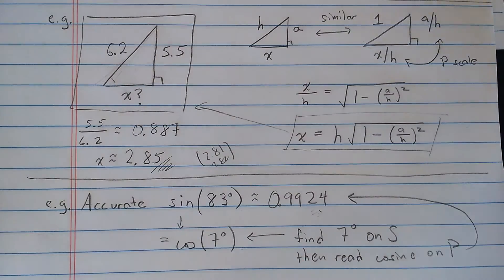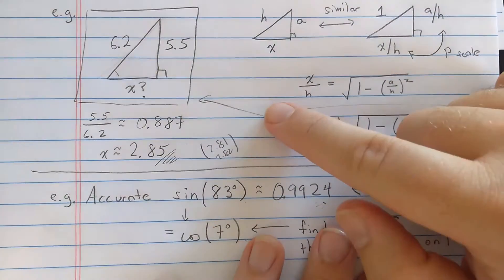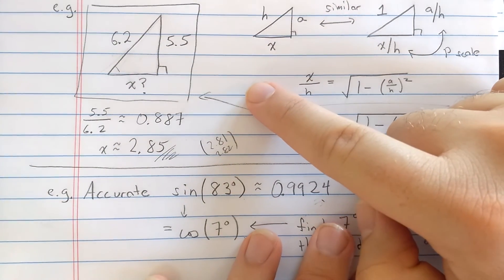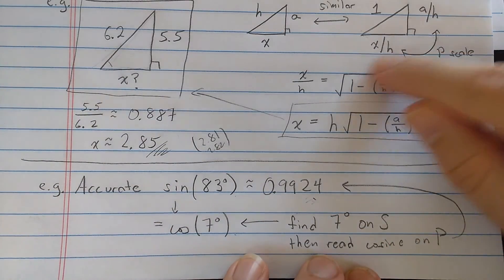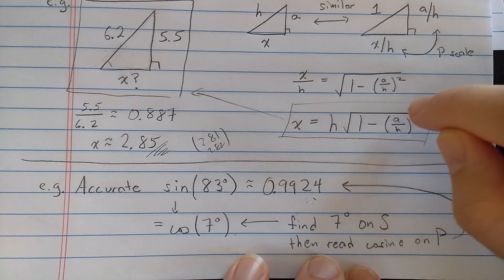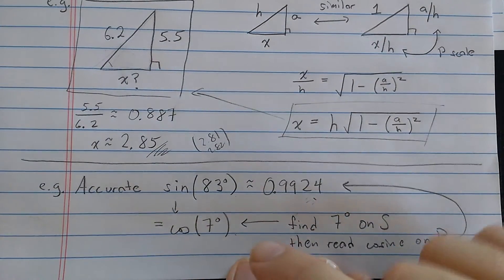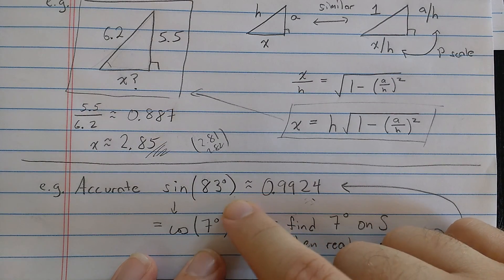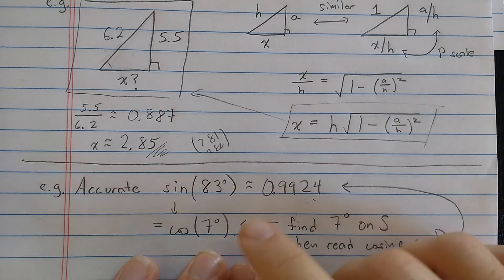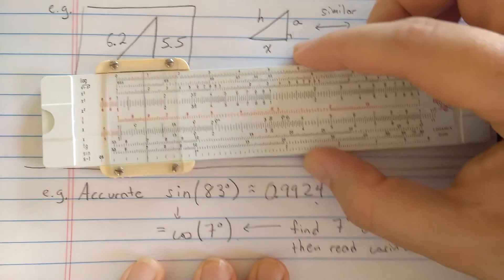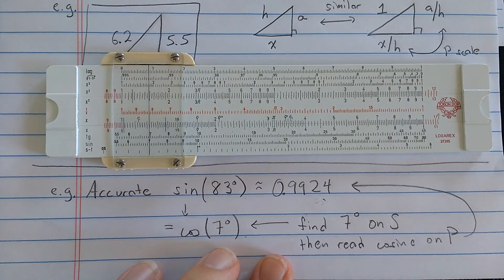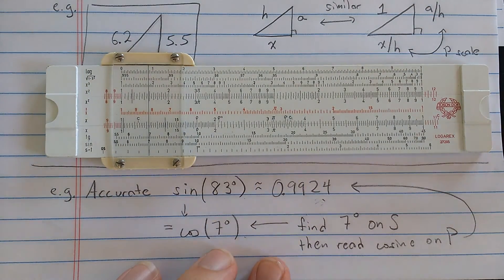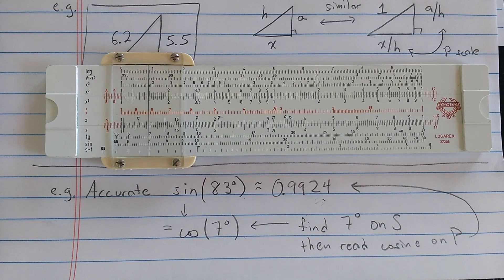So you can see the P scale is incredibly useful for things involving right triangles, anything which has this kind of form, which is a common form, and also for resolving sines of angles close to 90 degrees with much more accuracy than a slide rule which does not have the P scale. I hope you enjoyed this, and I hope you now understand the P scale on your slide rule.